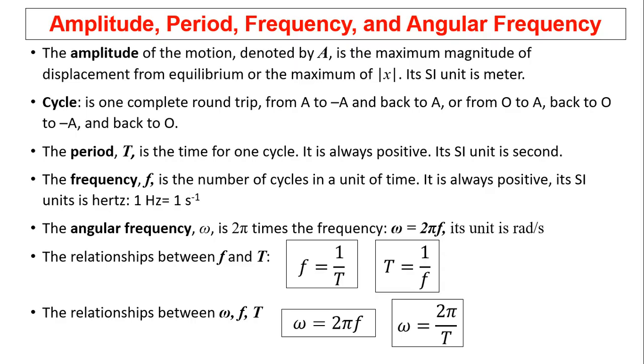Amplitude, period, frequency, and angular frequency are vocabularies to describe oscillation. The amplitude of motion, denoted by capital A, is the maximum magnitude of displacement from equilibrium, or the maximum of x. Its SI unit is meter.